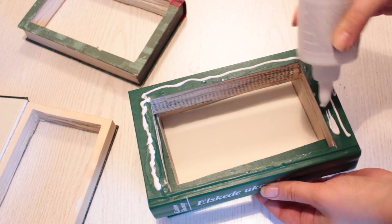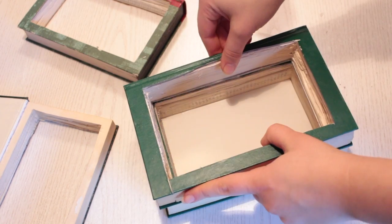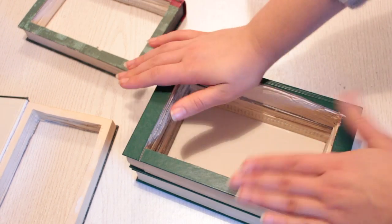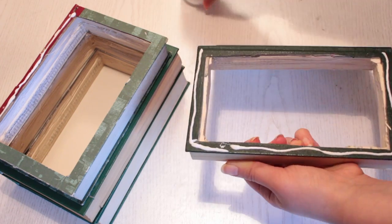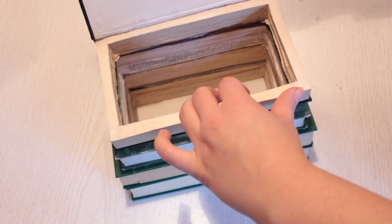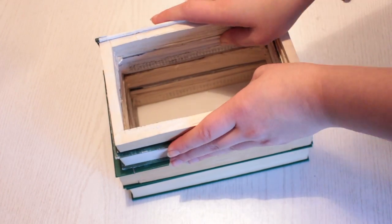Then put some glue all over the edges of the middle book and then attach it to the bottom book. Continue gluing the layers together until you reach the top. Glue the final book onto the rest and then place a heavy object on top of them like the giant book.